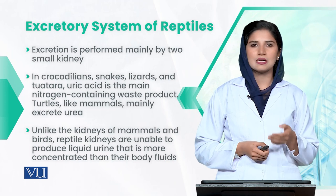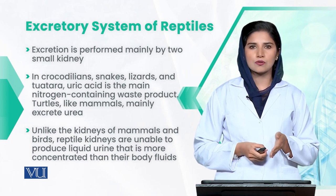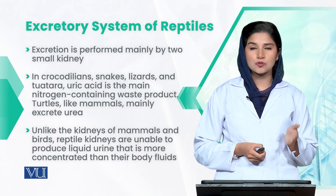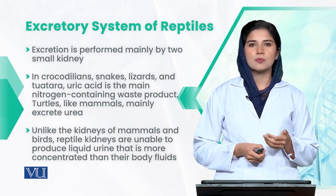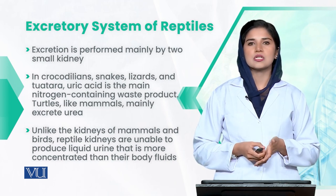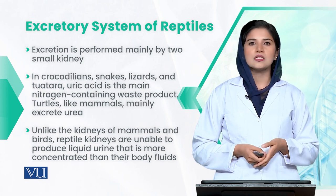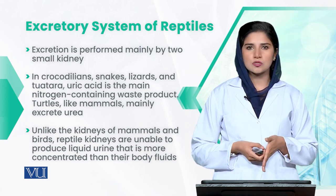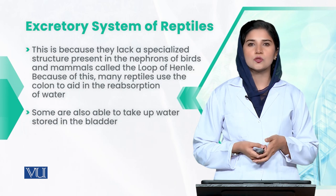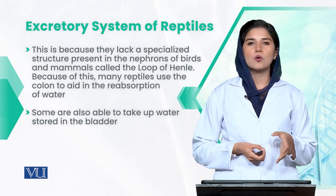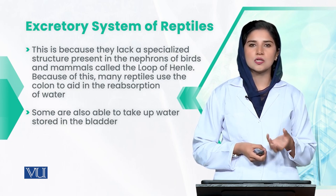If we talk about lizards, snakes, and crocodiles, their excretory waste is uric acid and urine. Reptiles mostly produce dilute urine because the loop of Henle structure is not well developed in them, so they cannot produce highly concentrated urine.